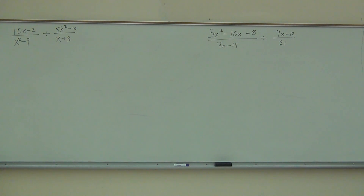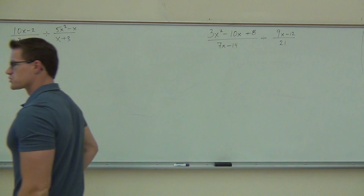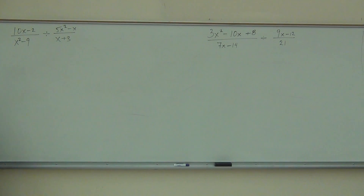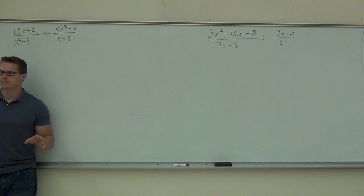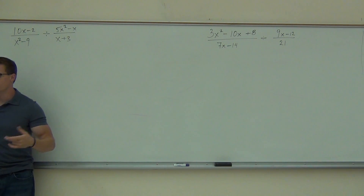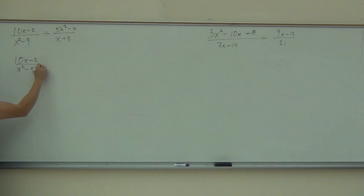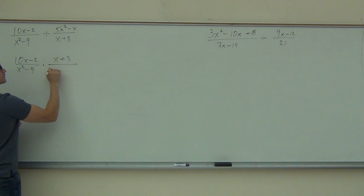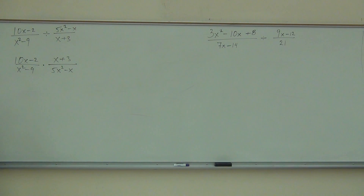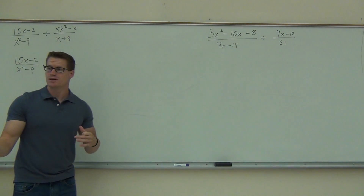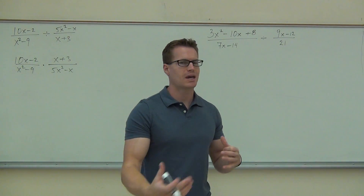We're about to start on this. We're looking at the first one over here. Hey, before you factor, what should you do with this problem? Flip. That's right, because we want to make sure we have that down. We don't want to forget about that. So we're going to flip the first, the second, or both? That's the second one. We've reciprocated the second fraction. Now we get to factor because now we don't even have a division problem anymore — it's just multiplication.